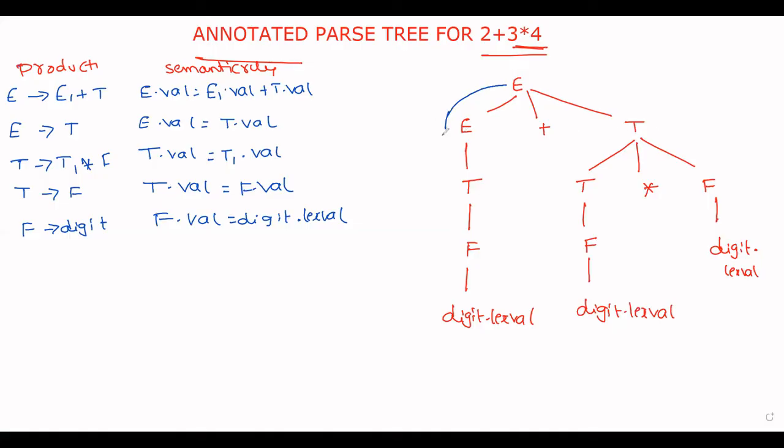Here this is the last one, digit dot lex value. What is the value? Initially 2. For each and every node, write down the semantic rule.